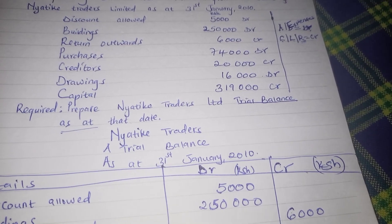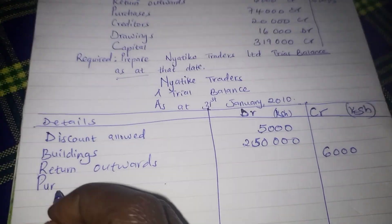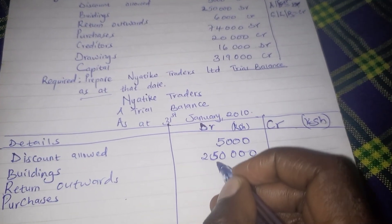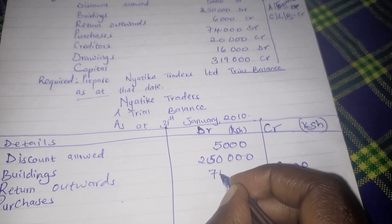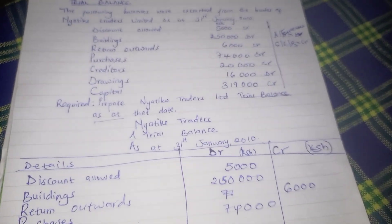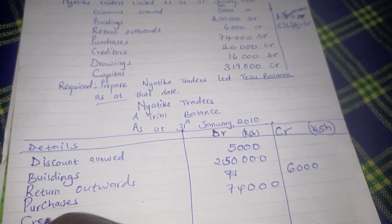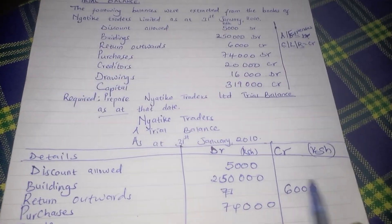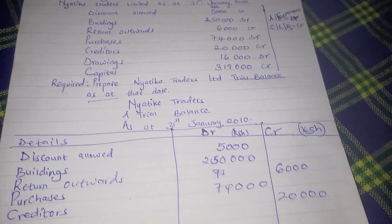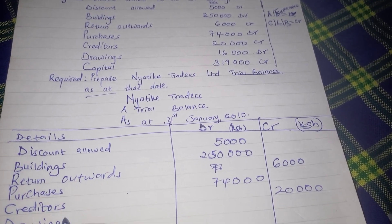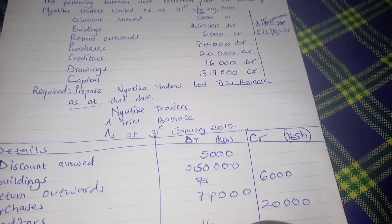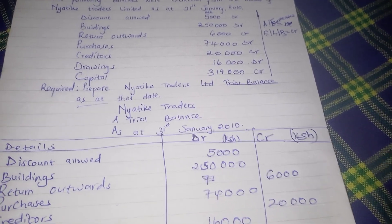The next item is purchases, and purchases have a debit balance, therefore we debit $74,000. After purchases, we have creditors, which is a liability, so a credit balance of $20,000. Then the next one is drawings, which is an expense, therefore a debit balance of $16,000.